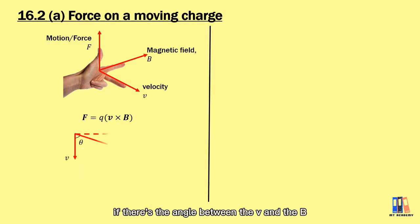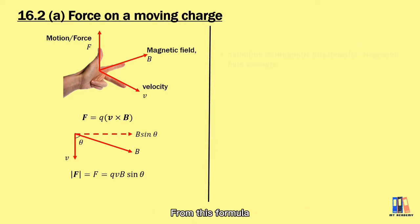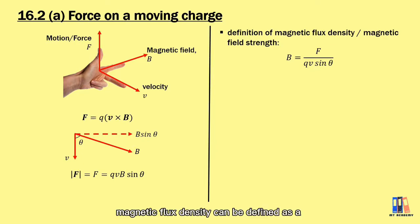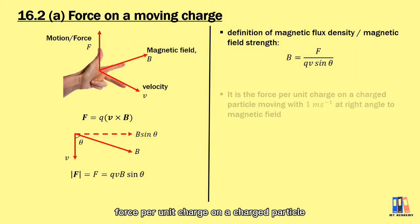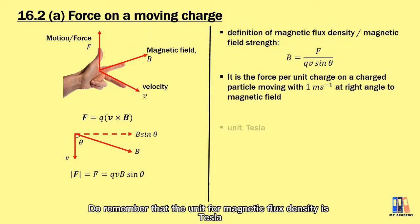If there is an angle between the velocity and the magnetic flux density, from this formula we can define the magnetic flux density B as equal to the ratio of force to the product of Q, V, and sine theta. Based on the formula, magnetic flux density can be defined as the force per unit charge on a charged particle moving at one meter per second at right angles to the magnetic field. The unit for magnetic flux density is Tesla.